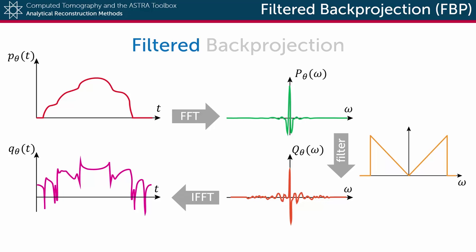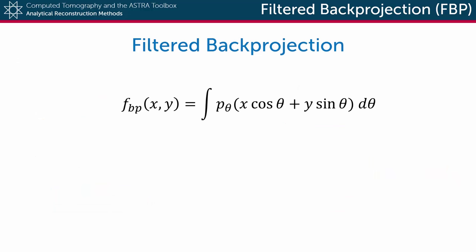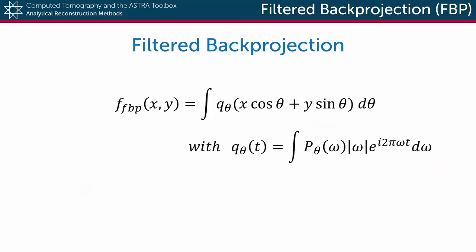In FBP, this filtered function Q is then back-projected over the domain. From a mathematical perspective, for normal back-projection we get the smearing out of a detector function over the lines of the x-rays, but for FBP we do this back-projection on the filtered detector function Q, which is the inverse Fourier transform of the Fourier transform of the original function P, multiplied with the absolute value of omega — which is the RAM-Lac filter.